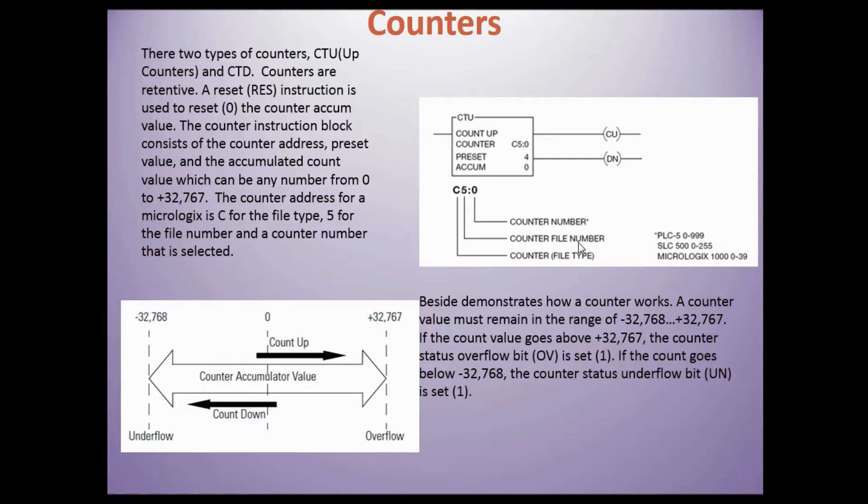This example demonstrates how a counter works. A counter value must remain in the range of negative 32,768 to 32,767. If the counter goes above 32,767, the counter status bit OV is set to 1. If the counter goes below negative 32,768, the counter status underflow bit is set to 1.